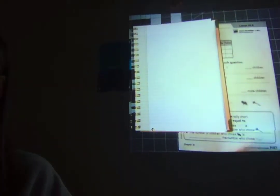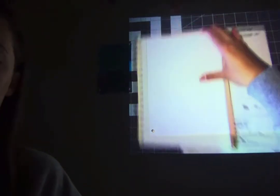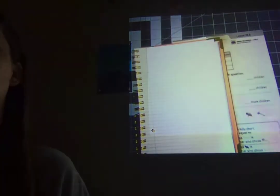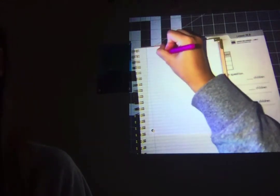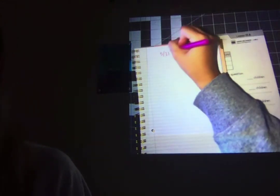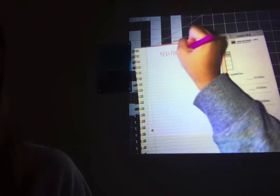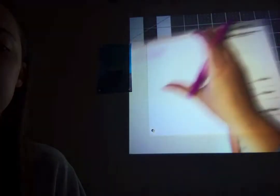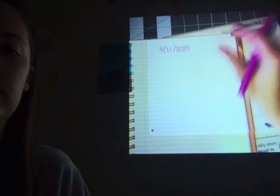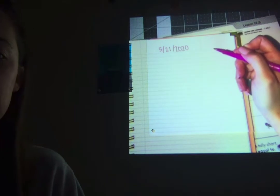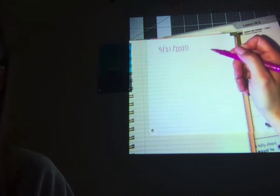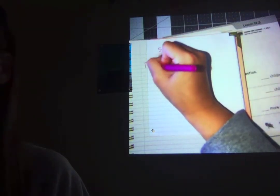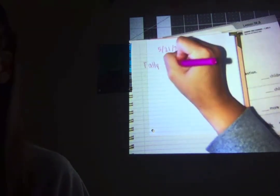Now at the top, if you'd like, you can write today's date, which I believe is the 21st. Let me check. Yes. 5-21-2020. I'll zoom in so you can see that. 5-21-2020. That's today's date. And we are going to be talking about tally marks. Go ahead and write down tally marks.